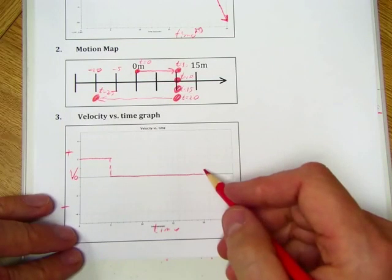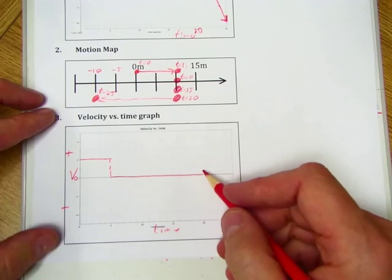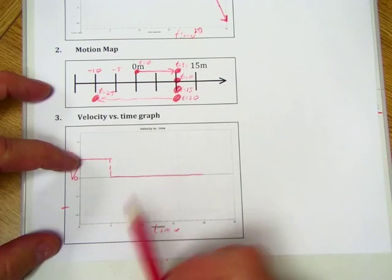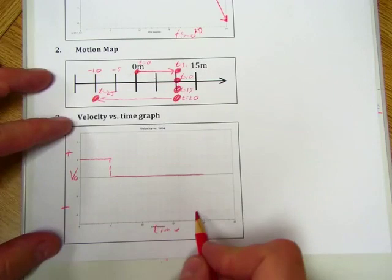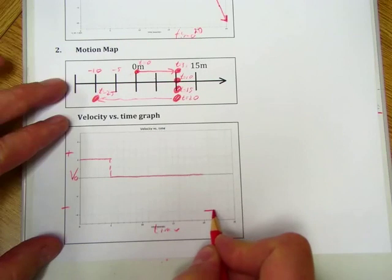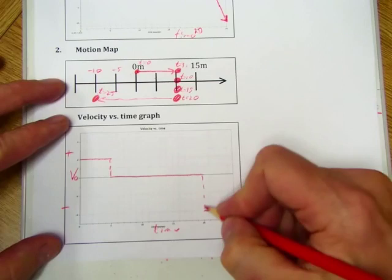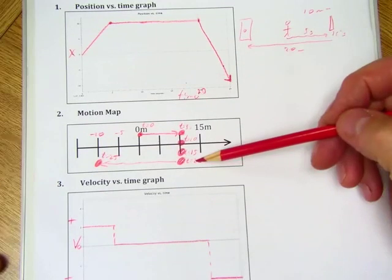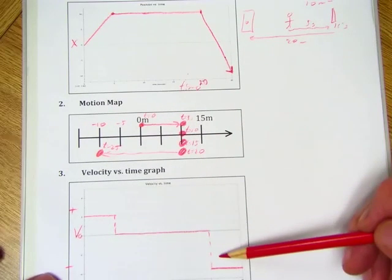And then she walks 20 meters south in the opposite direction she was walking in 5 seconds. So 20 meters in 5 seconds, 20 divided by 5 is 4 meters per second. But since it's in the other direction, it's negative 4 meters per second. So it's position versus time, motion map, and velocity versus time.